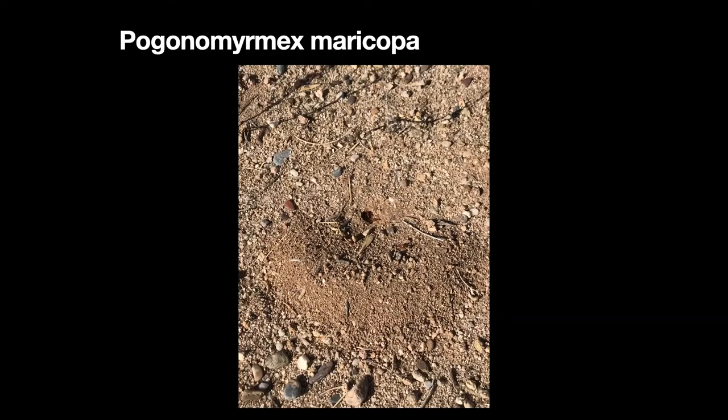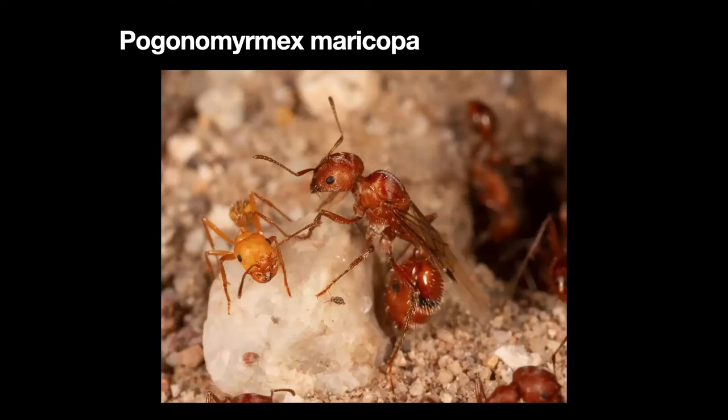Here is the starting of a nest of Pogonomyrmex maricopa, which has the worst sting of any insect in Arizona. Here is the queen before she's taken flight — Pogonomyrmex maricopa queen. When you see a really light-colored ant and the other individuals are darker, that usually means it's what we call a callow — one that's just eclosed from its pupa maybe one or two days ago. It gradually changes to the color of the rest of the ants.